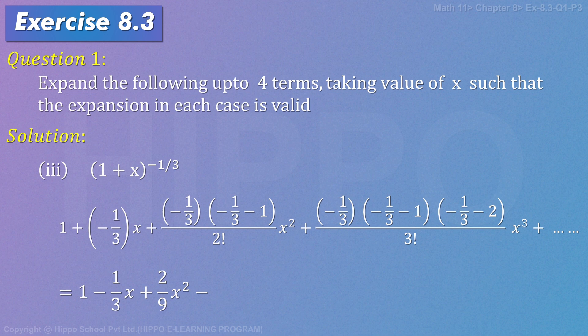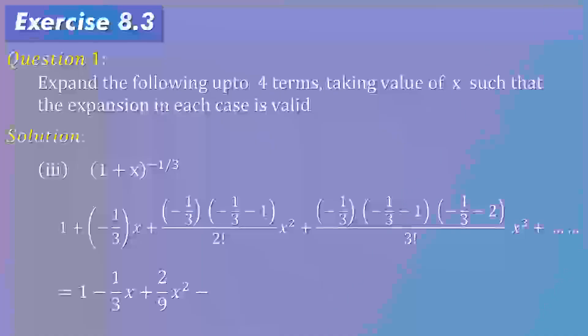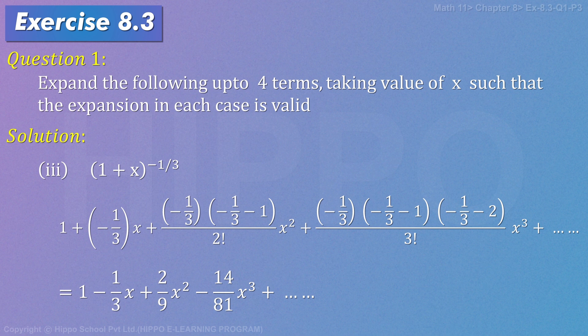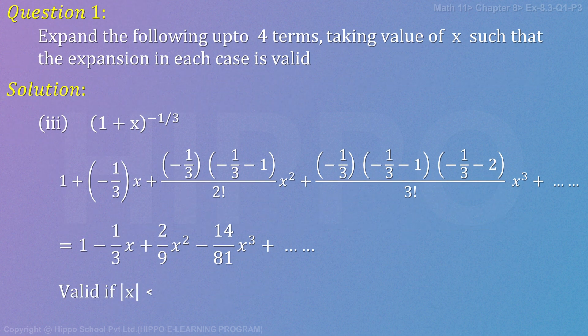This is not divided by three factorial. Three factorial is six. The answer will be minus fourteen by eighty-one x cubed plus so on. This is valid if mod of x less than one.